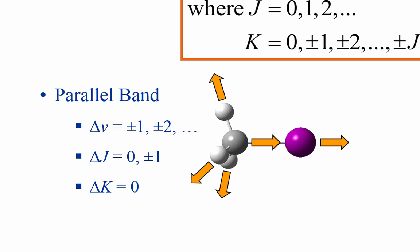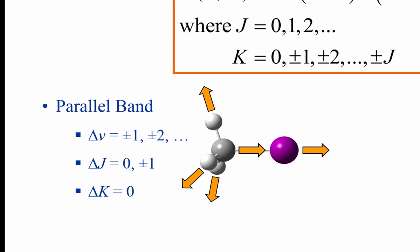And delta J, for a symmetric top molecule, is not only plus or minus 1, but it can also be 0 as well. This means we will see a PQR band structure. But furthermore, delta K is equal to 0.